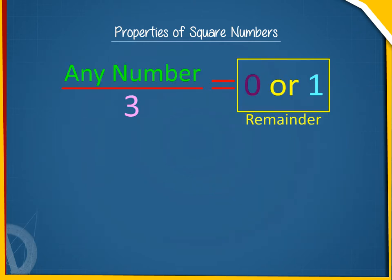Property 5: A perfect square always leaves remainder 0 or 1 on division by 3. However, conversely, it may not be true. For example, on dividing 10 by 3, the remainder is 1 but 10 is not a square number.